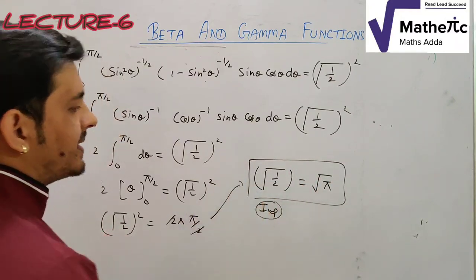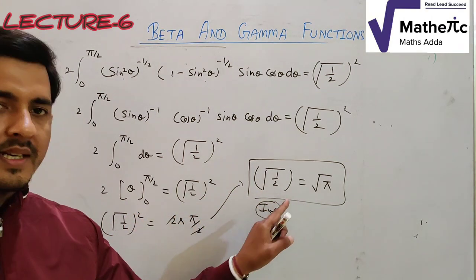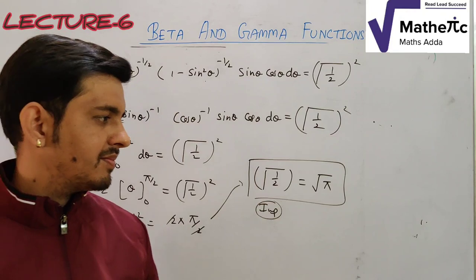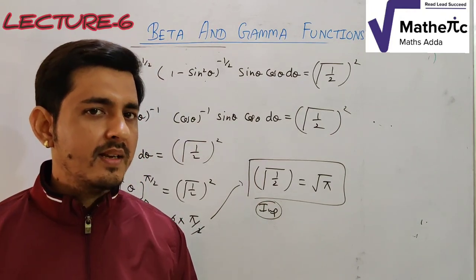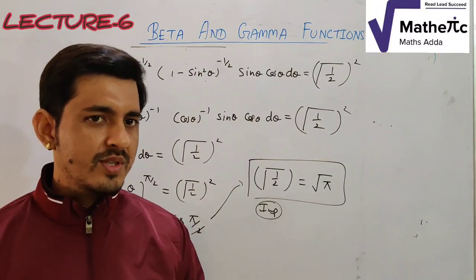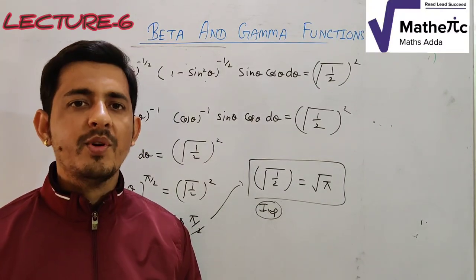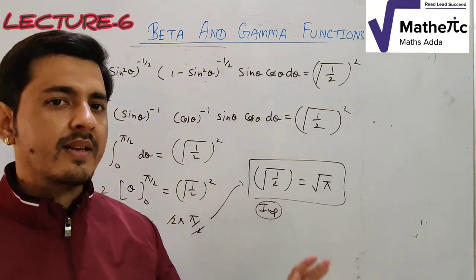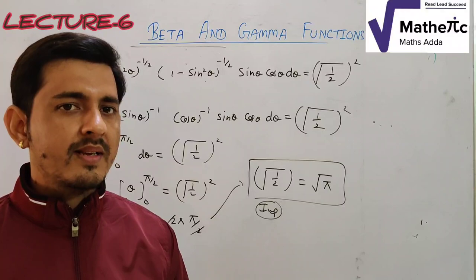All three proofs are very important from an exam perspective and for solving future numericals. The 1st and 3rd results are most commonly asked as proofs; the 2nd result's proof is asked less frequently, but all three results are essential. In the next video we will solve numerical problems using these results.